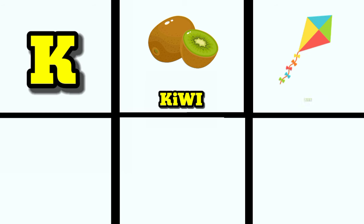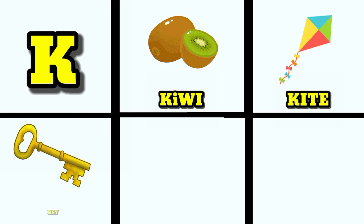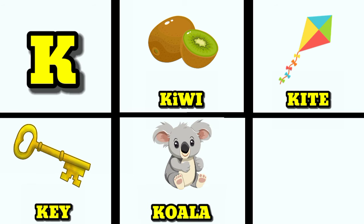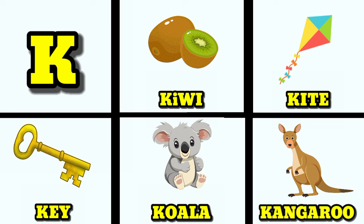K is for kiwi. K is for kite. K is for koala. K is for kangaroo.